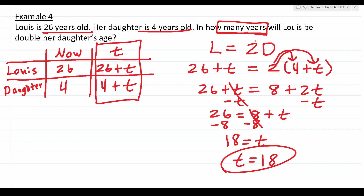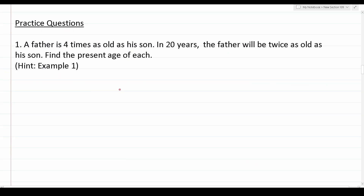That covers all four variations of these age problems. The steps are: set up a chart, fill in your now column, fill in your change column, write an equation, use the values from your change column to fill in your equation, and solve for the letter variable — either x or t. Now I encourage you to pause the video, attempt each practice question on your own, and then resume to check your solution.